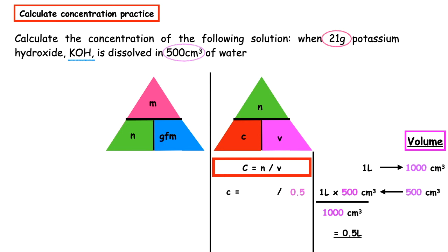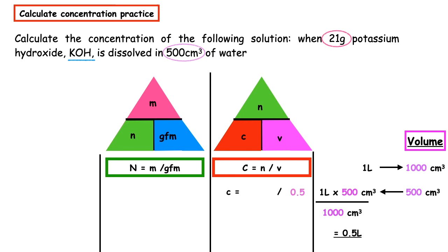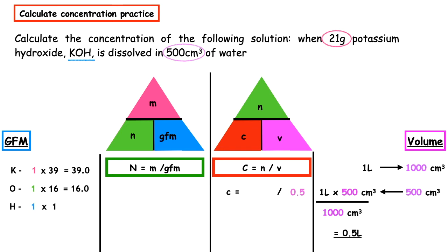Because we don't have the number of moles, we use the other triangle: number of moles = mass ÷ GFM. The mass given is 21 grams. We use the formula KOH to calculate the gram formula mass. Potassium: one times 39 equals 39. Oxygen: one times 16 equals 16. Hydrogen: one times 1 equals 1. Adding those up gives a GFM of 56. So number of moles equals 21 divided by 56, which gives 0.375 moles.